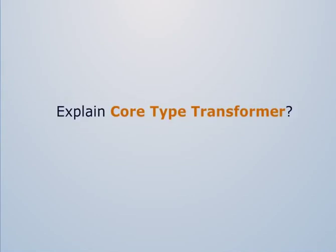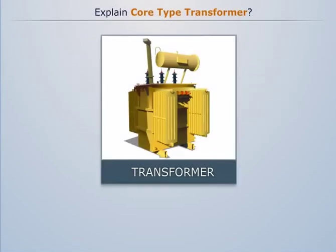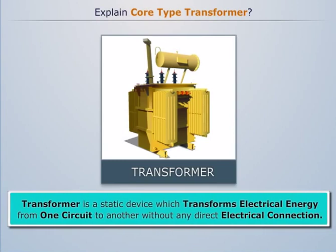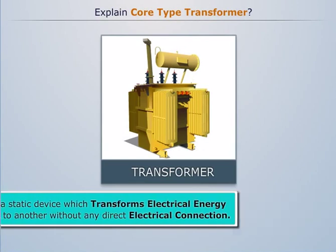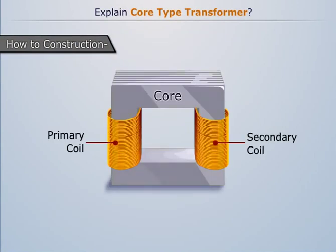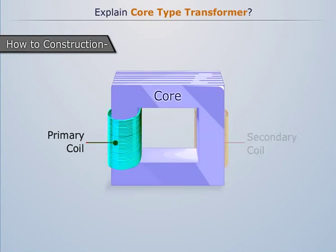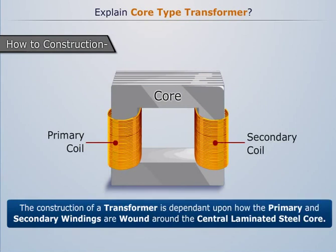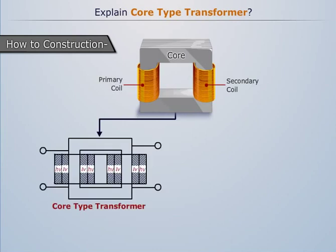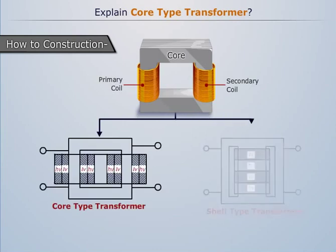A transformer is a static device which transforms electrical energy from one circuit to another without any direct electrical connection. For its construction, we need a central core and two windings — primary and secondary. The construction depends on how the primary and secondary windings are bound around the central laminated steel core. Transformers are constructed in two types: core type and shell type.